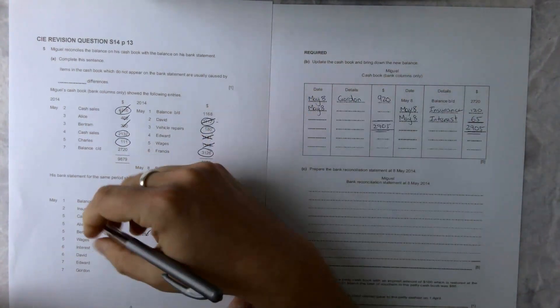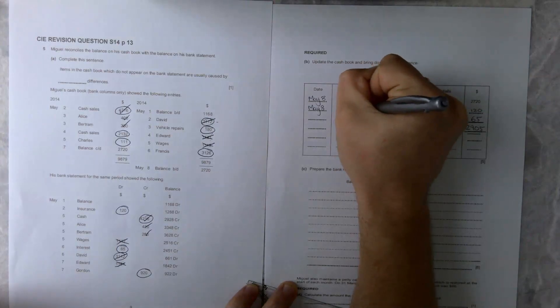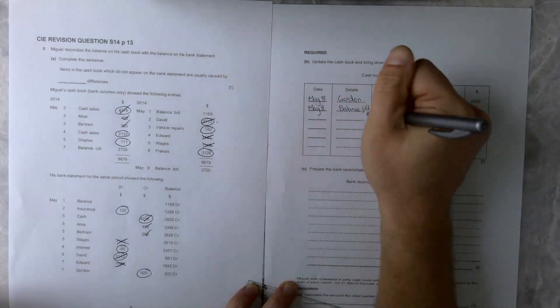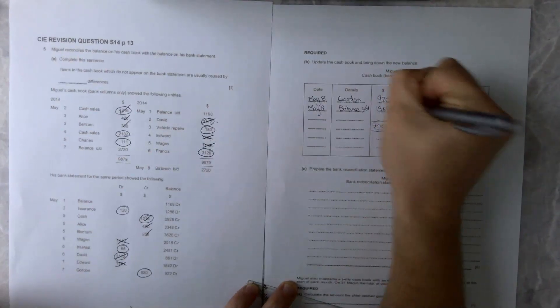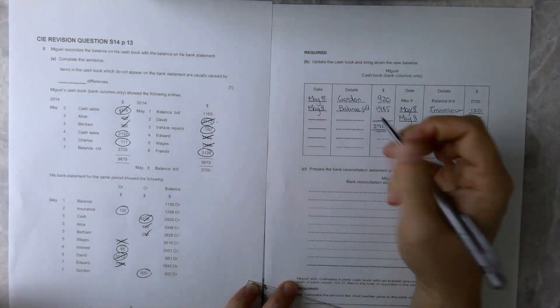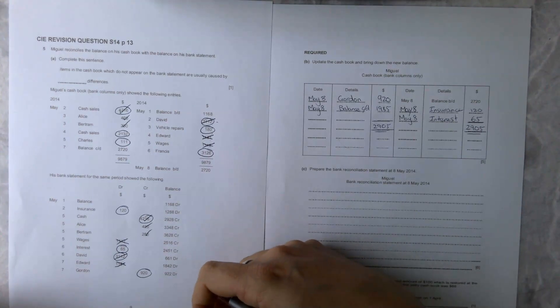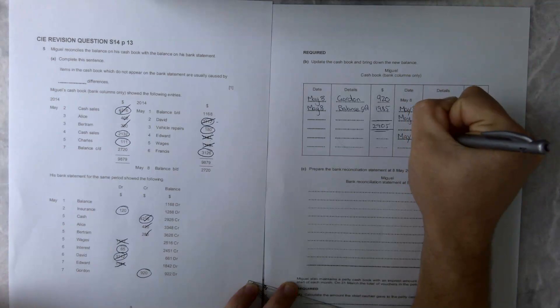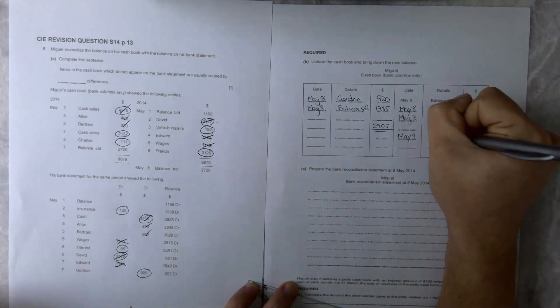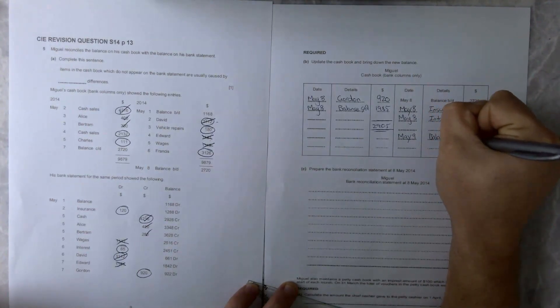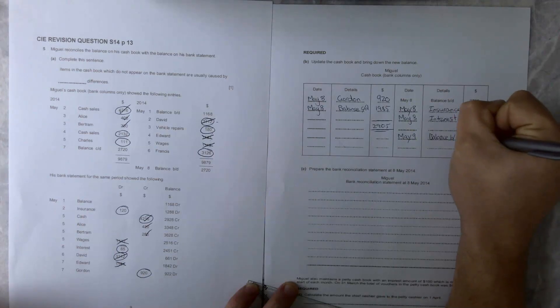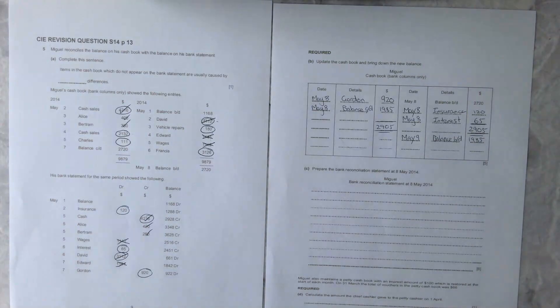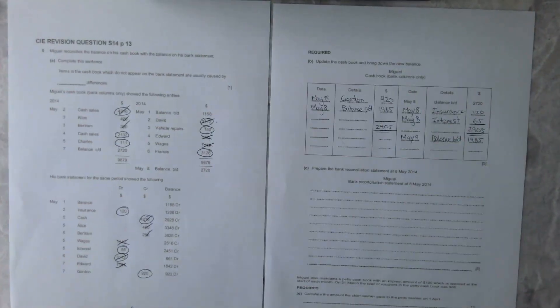Remember we're going to have to balance this, and because we're talking about May 8th we can just balance it at May 8th again. So balance CD, and that is going to be $1,985. Then remember, don't be lazy with this, but this should be May, just do the next day, May 9th at balance BD, and this is BD and that will be $1,985.